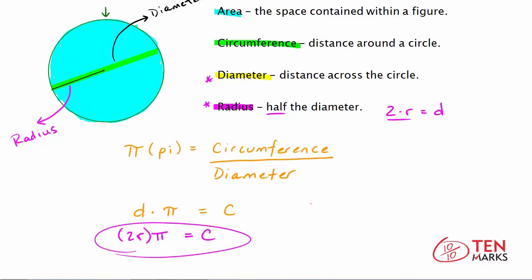So here you have the formula for finding the circumference of a circle if you know the radius. So circumference equals 2πr, and that's just rearranging the terms.